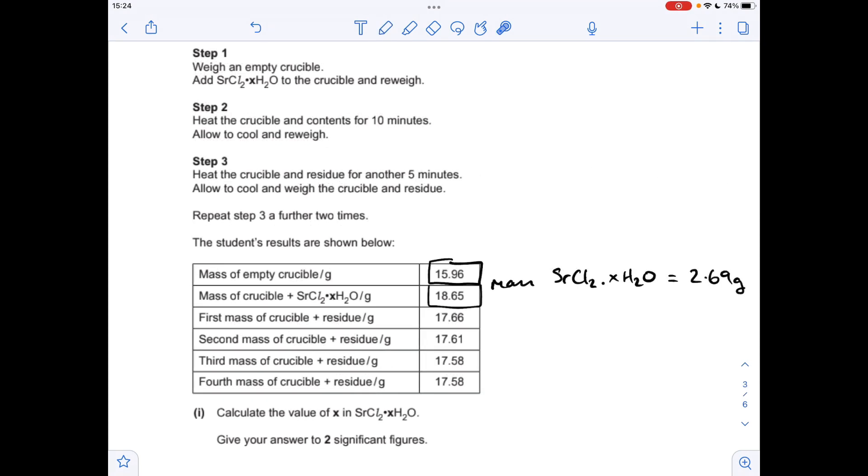Moving on to the next question, you can see I've already made a start. The first thing I'm going to do is work out how many grams of the hydrated salt we used at the start of the experiment. That's the mass of the crucible with the hydrated salt in minus the mass of the empty crucible, which is coming out at 2.69 grams.